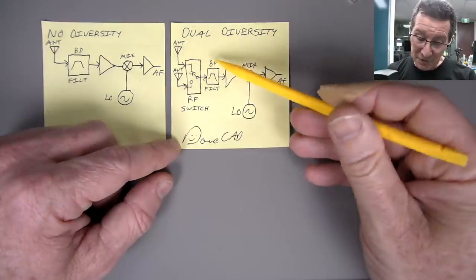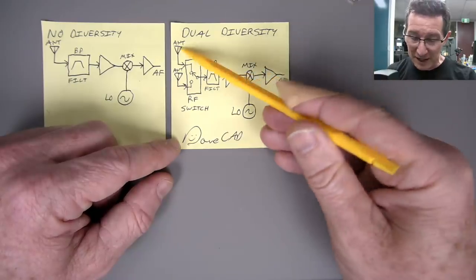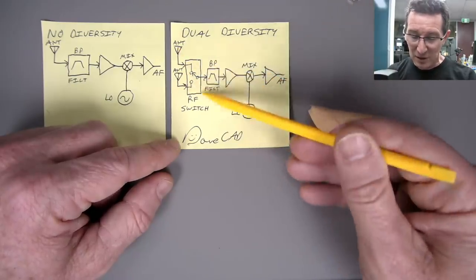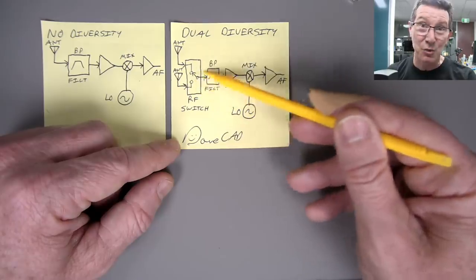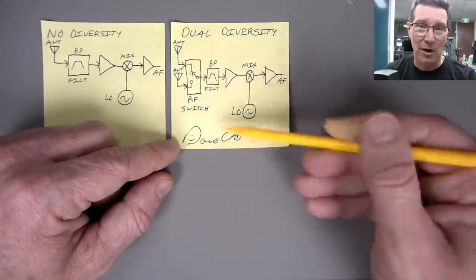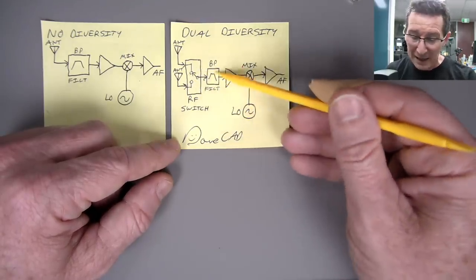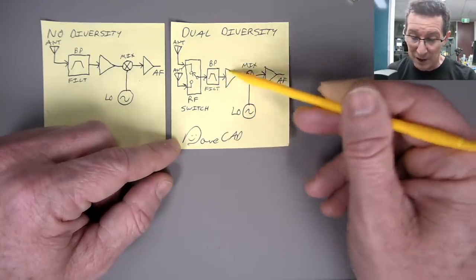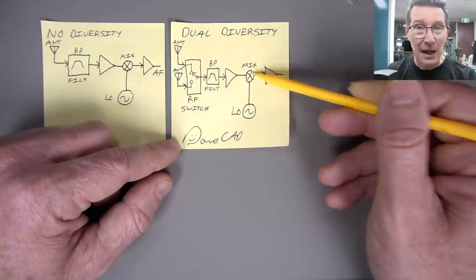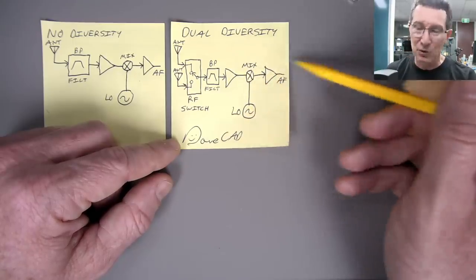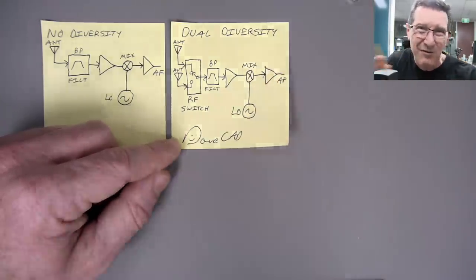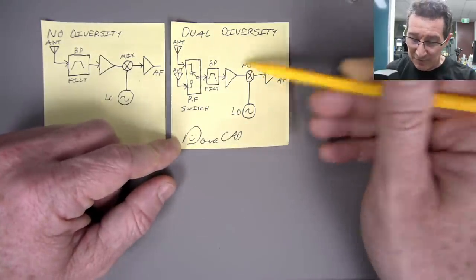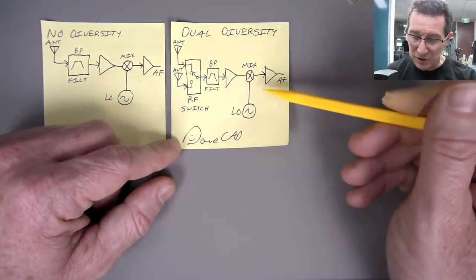So what happens in a diversity or dual-diversity receiver is that there's two antennas like this, and they basically go into an RF switch, like this, which is controlled by the microprocessor in the thing, and it goes into the same, exactly the same RF system. The bandpass filter, the, uh, amplifier, and the mixer, which is the local oscillator, it down-converts and you get your audio frequency out, or whatever, however the, uh, RF system works, right? Typical block diagram.